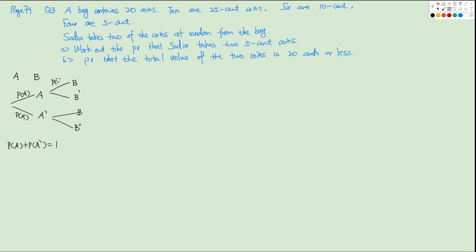This branch is the probability of B happening under the condition that A has happened. So here will be P(B'|A). And this one will be P(B|A'). And here we have P(B'|A'). We also have the definitions of conditional probability, from which we are able to calculate A∩B, A∩B', A'∩B, and A'∩B'.